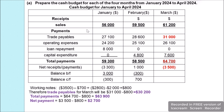For February, sales are $59,500 — the only receipts, so total receipts are $59,500. For payments, trade payables are the January purchases of $28,600, operating expenses are $25,100, and capital expenditure is $4,800. Total payments are $58,500. With receipts of $59,500 minus payments of $58,500, we have net receipts of $1,000. The opening bank balance for February is an overdraft of $300, so the closing balance is $700.